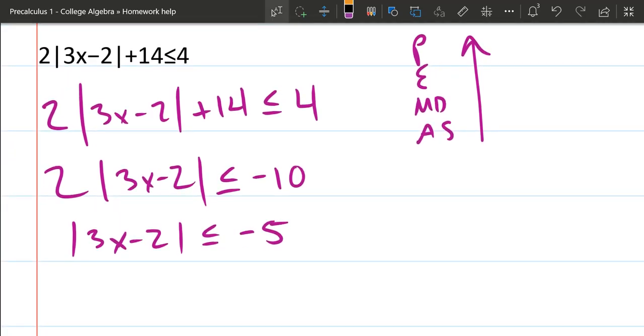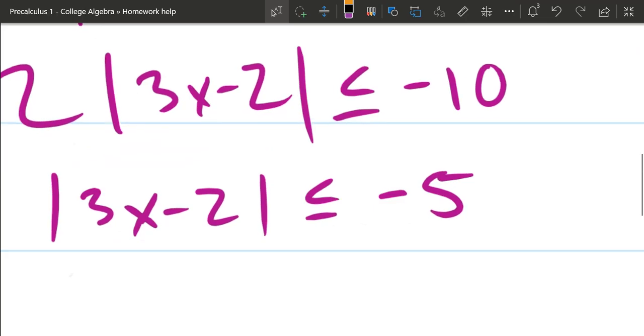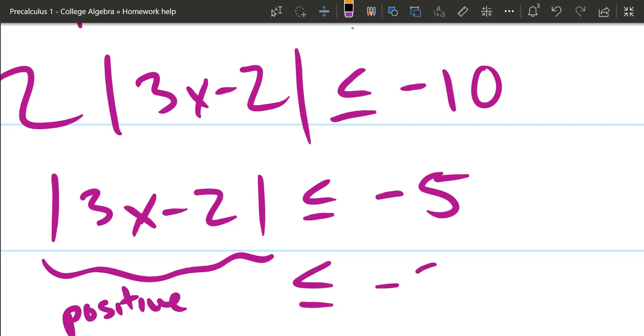So we've solved for the inequality, for the absolute value now. But before we take the next step, let's think about what we're really looking at. I have something right here, an absolute value, which is always going to be positive. And this positive thing is less than or equal to negative 5. Does that make sense?